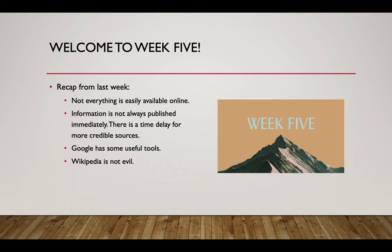Wikipedia is not evil — everyone uses Wikipedia, even the people who tell you not to use it. Go ahead and use it, but don't cite it, because that's not something you should do in college-level research. We don't look for general encyclopedias; you don't want to cite Encyclopedia Britannica in a college paper, just like you wouldn't want to cite Wikipedia. You want to find more credible sources and use Wikipedia as a tertiary source — a third-level source — that can direct you to more credible, researcher-level work.